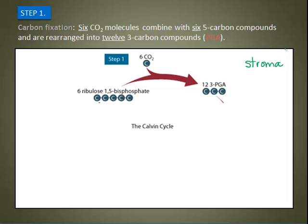In step one, carbon dioxide is fixed by an enzyme called RuBisCO. RuBisCO adds carbon dioxide to ribulose biphosphate — RuBP — to form two molecules of phosphoglycerate, or PGA. Six carbon dioxide molecules join with six RuBP molecules to form six molecules with six carbons total, which then fall apart spontaneously to form 12 molecules of PGA. Each PGA molecule has only three carbon atoms.